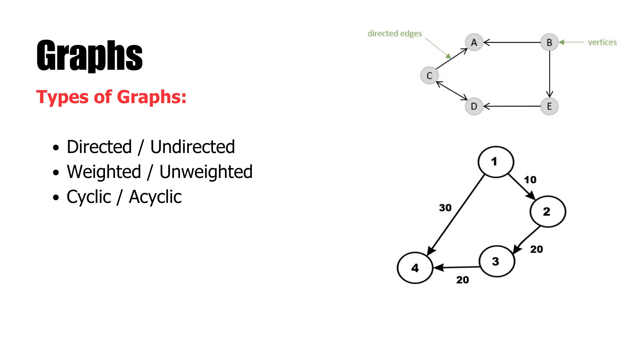A graph is a non-linear data structure used to represent relationships between objects. It consists of vertices or nodes and edges connecting pairs of vertices. Graphs are extremely flexible and used in many real-life situations such as social networks, GPS navigation systems, recommendation systems, and web page hyperlinking.